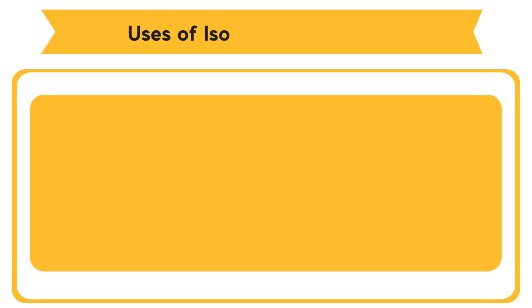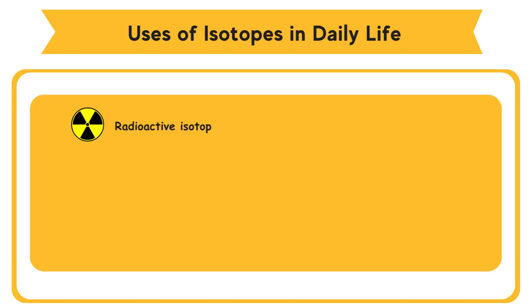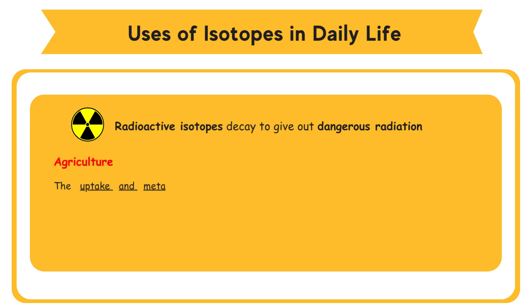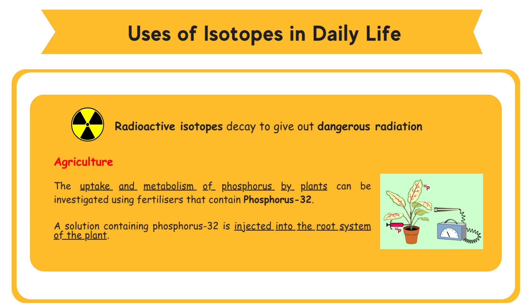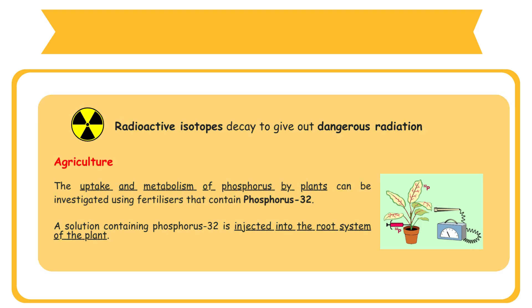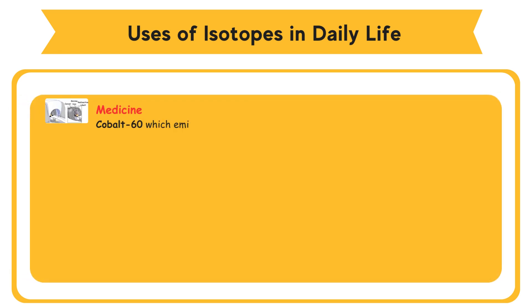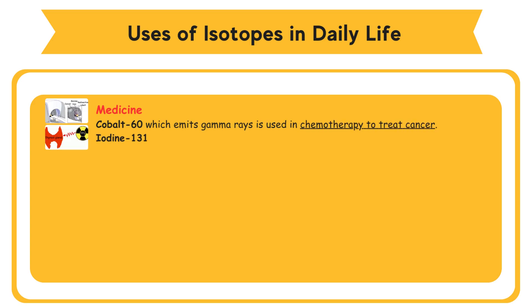Uses of isotopes in daily life. Radioactive isotopes decay to give out dangerous radiation. In agriculture, phosphorus-32 in fertilizers is used to investigate the uptake and metabolism of phosphorus by plants — a detector tracks the movement of P-32. Cobalt-60, which emits gamma rays, is used in chemotherapy to treat cancer. Iodine-131 is used in the treatment of thyroid disease.